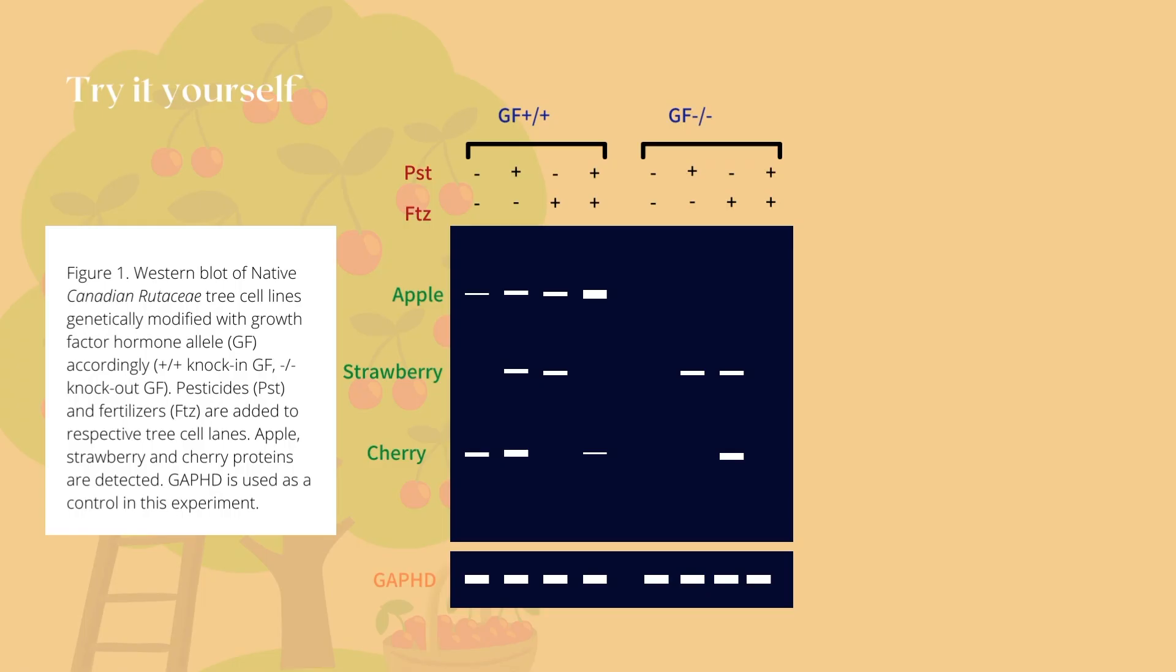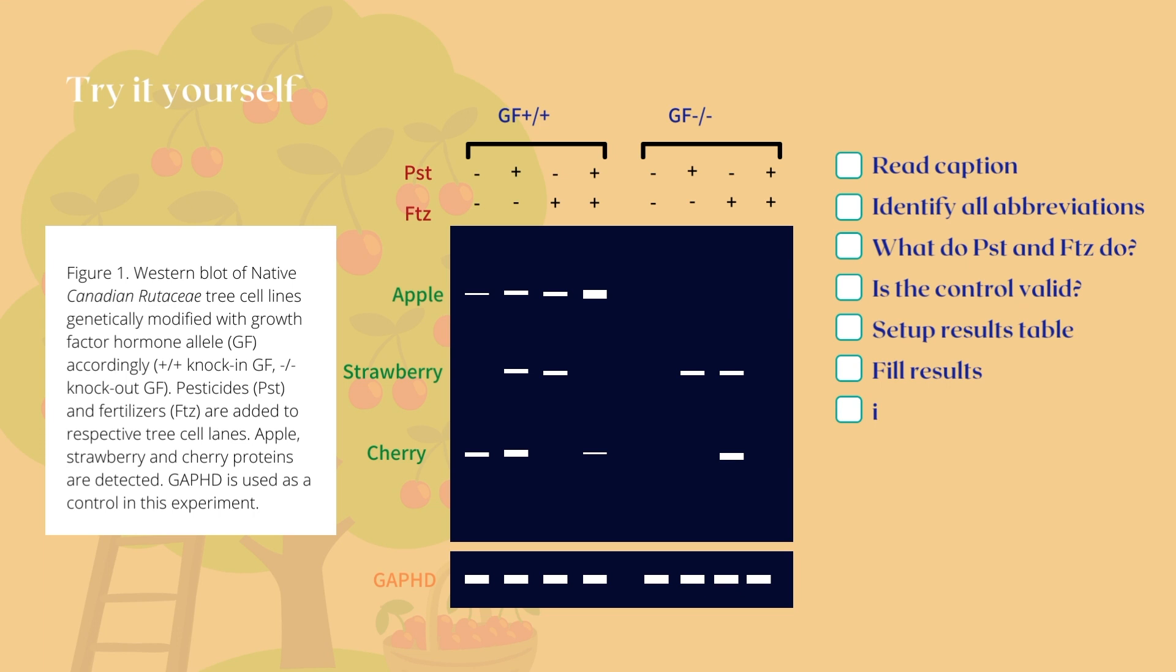Time to put your knowledge to the test. Remember, you always have to read the caption of figures to decipher any unknown abbreviations. Of course, this example is not something that can possibly be done using Western blots unless I don't know about it. But it will test your ability to read and interpret results. Following the checklist, read the caption, identify abbreviations and unknowns. What do chemicals do? How do they influence tree cells? Is the control valid? Are there equally thick lines? Then set up a results table like I showed you before and fill it in.